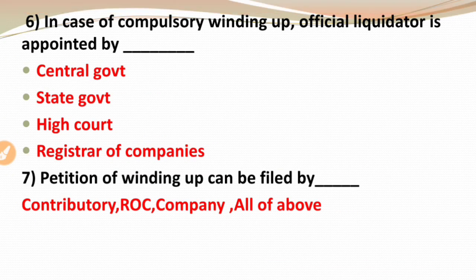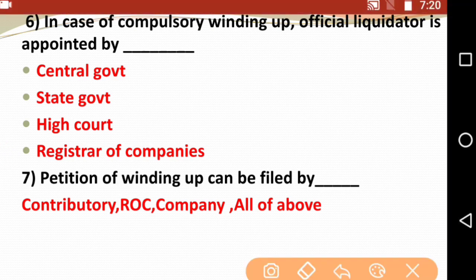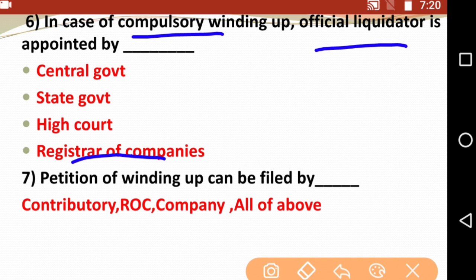Next question: In case of compulsory winding up, official liquidator is appointed by — Central Government, State Government, High Court, or Registrar of Companies. In compulsory winding up, who appoints the liquidator? The right option is Central Government. The official liquidator is appointed by the Central Government.